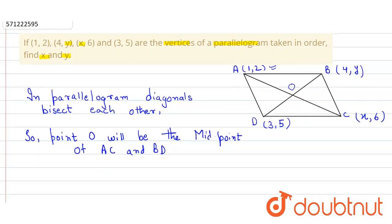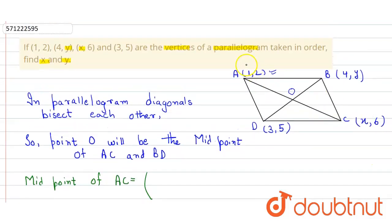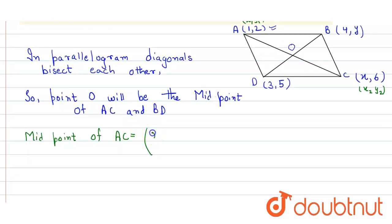So here we find the midpoint of these two diagonals. The midpoint of diagonal AC, let the coordinates be x1, y1 and x2, y2. The formula is x1 plus x2 upon 2 and y1 plus y2 upon 2.